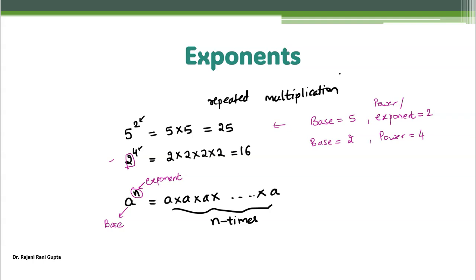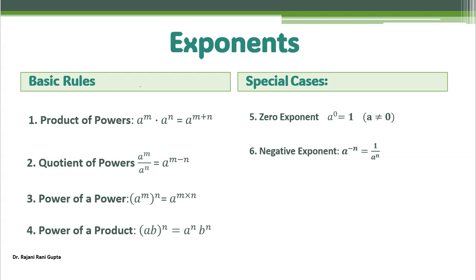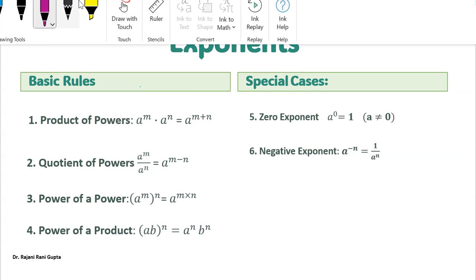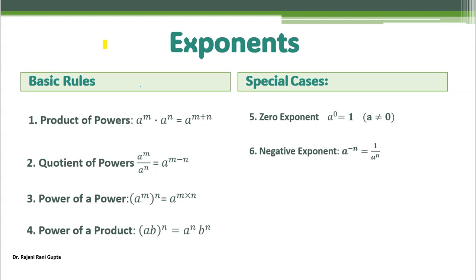Now let's see what are the basic properties of exponents that we can use to simplify expressions. There are 4 basic rules of exponents with 2 special cases. The first rule is the product of powers. If you look at a power m dot a power n, the base is the same and these two terms are multiplied.